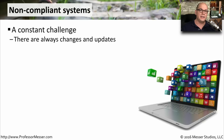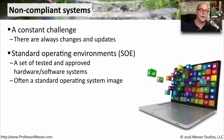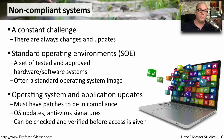With all of these different vulnerabilities and types of attacks, it's important that your IT organization knows exactly how secure your system might be. That's why they usually will have something called a standard operating environment, or an SOE — this is a set of tested and approved software and hardware that is able to protect your system from all of the latest security vulnerabilities. This is also why you may not be able to install your own software onto computers at work, because there's no telling what type of security issue may be created by installing that software on your work device. To be able to stay in compliance, your system will occasionally need operating system updates, and your anti-virus signatures are updated occasionally — all of these software updates have to be checked and verified before they're rolled out to all of your compliance systems.